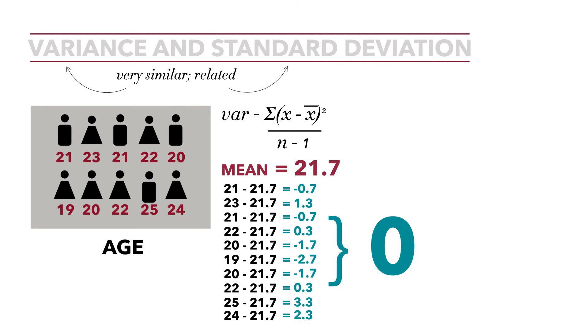How do we get rid of that? We use the squared differences, and that's why we square the difference. Negative 0.7 squared equals 0.49, 1.3 squared is 1.69, then 0.49, 0.09, 2.89, negative 2.7 squared is 7.29, again 2.89, 0.09, 3.3 squared is 10.89, and 2.3 squared is 5.29. Now, if we sum those from the formula, the sum of all the squared differences is 32.1.